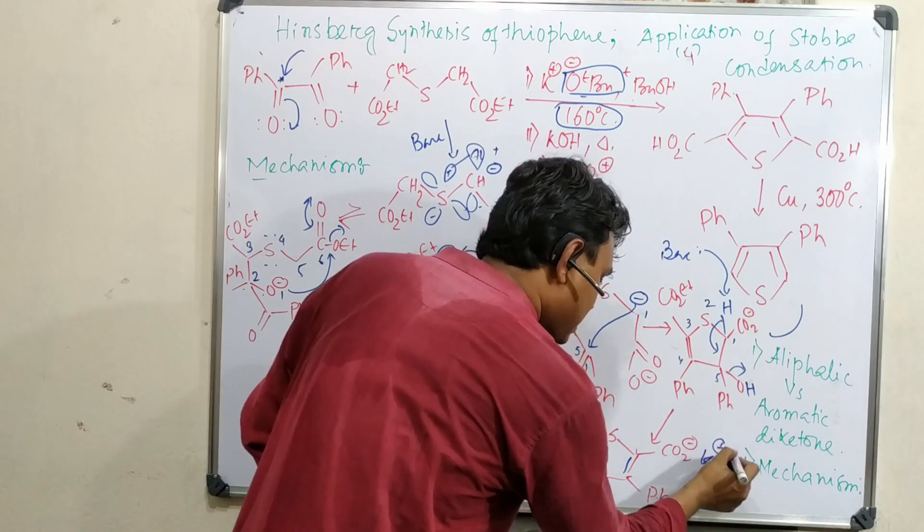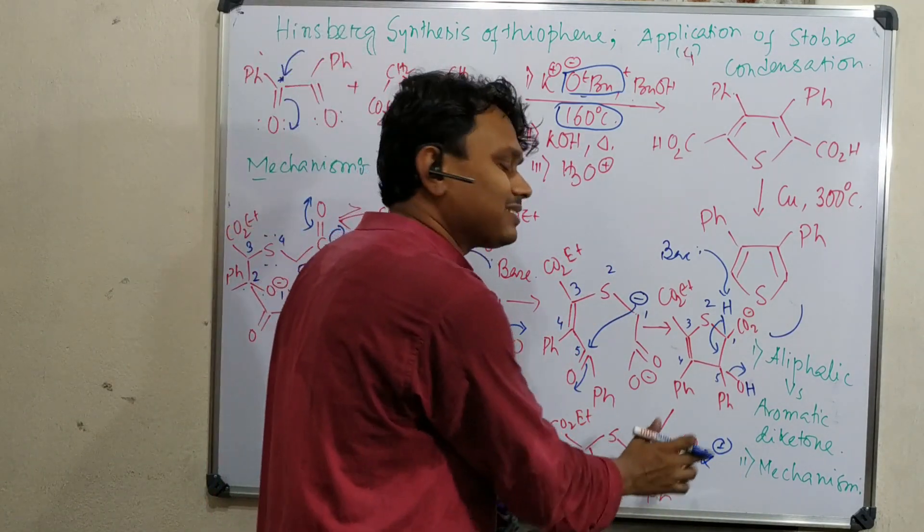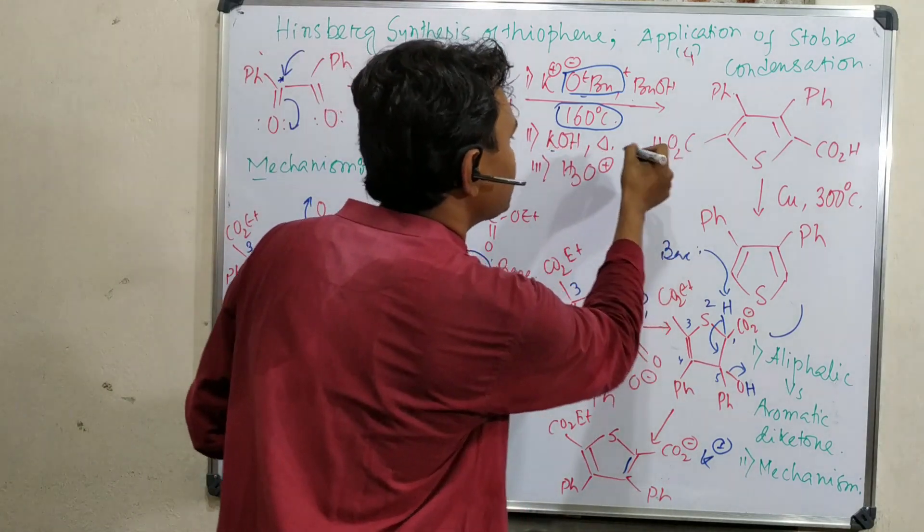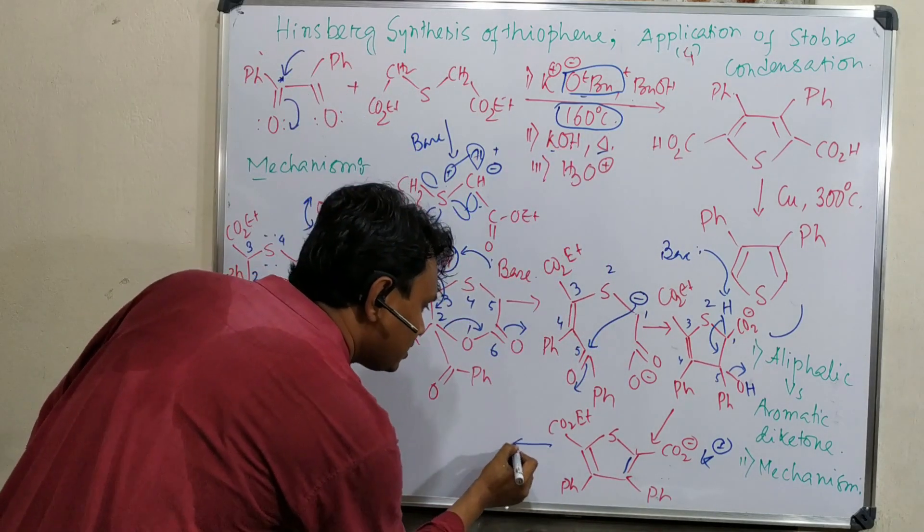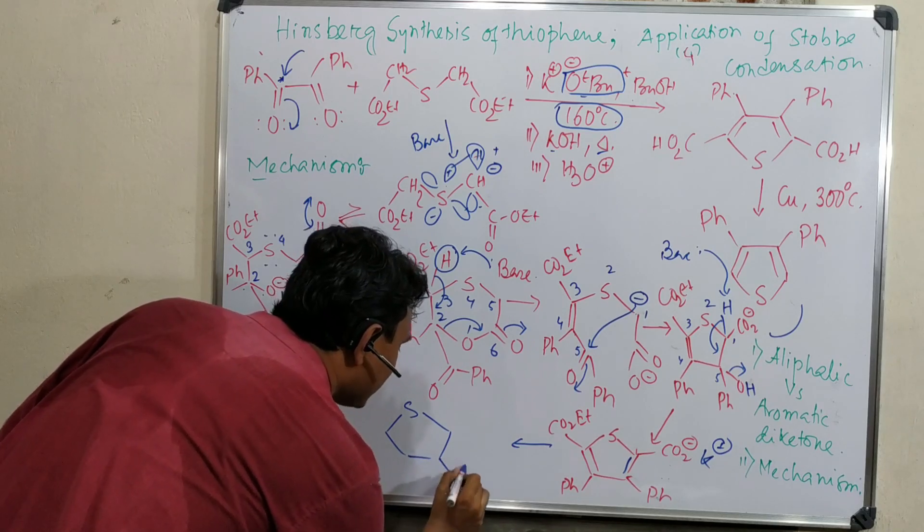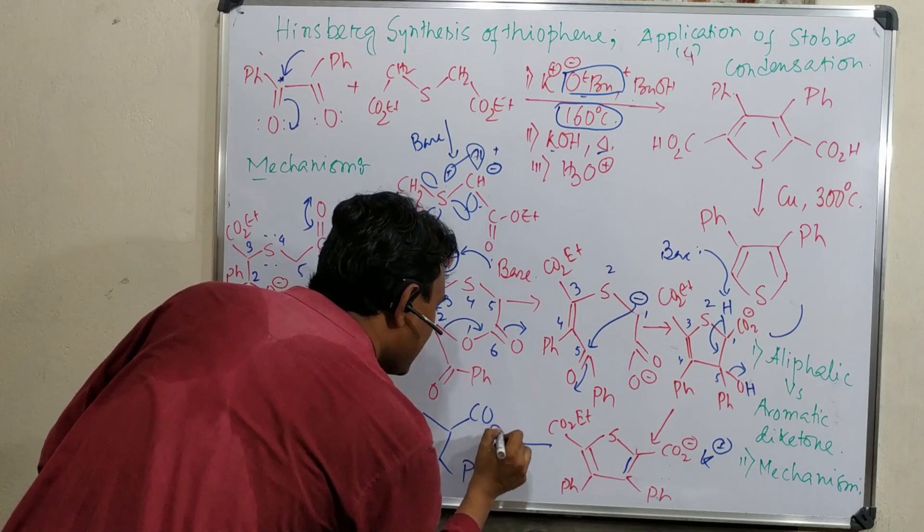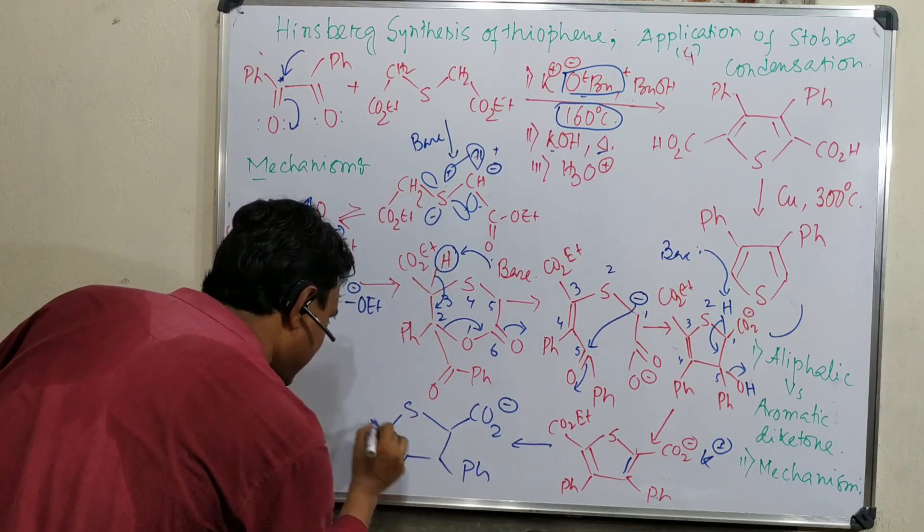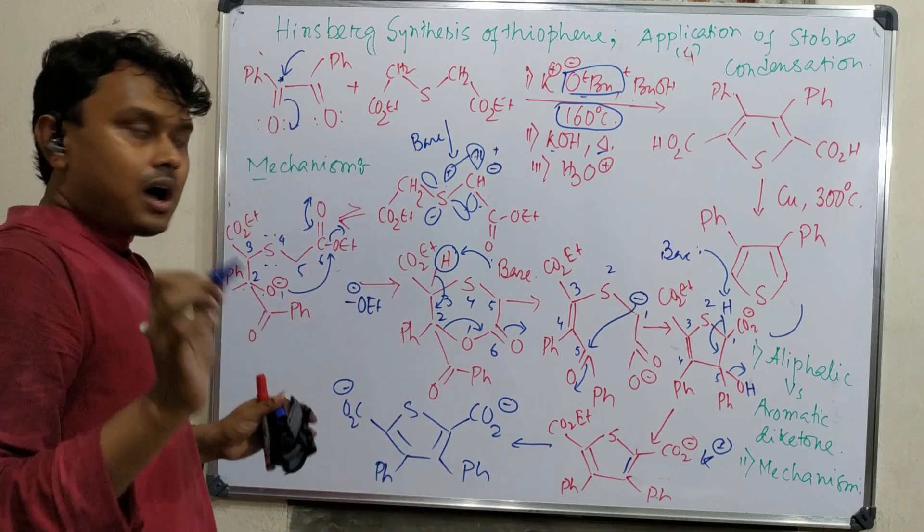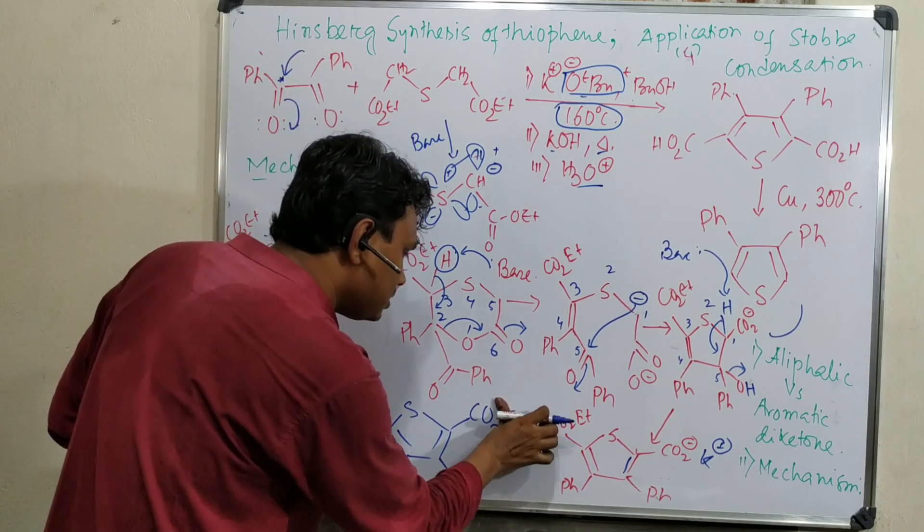Now you can see this is carboxylate anion. This K-plus means this is actually a half-ester: one is ester, another is carboxylate. Like Stobbe condensation, we have KOH under refluxing conditions. What it will do is the KOH will hydrolyze this half-ester to make the corresponding carboxylate anion.